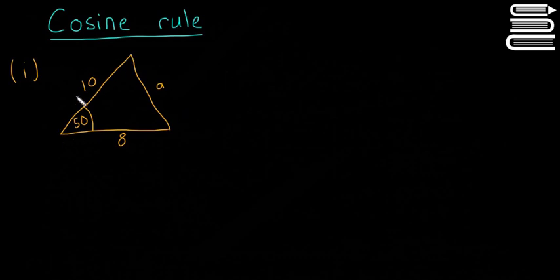So we have a triangle in front of us. We know 10, we know 8, we know the angle in between it, 50 degrees. And we want to find out what the length of this side here, A, is.